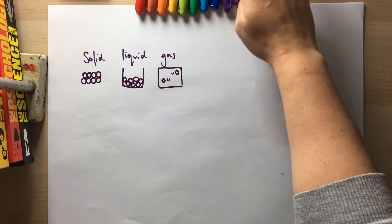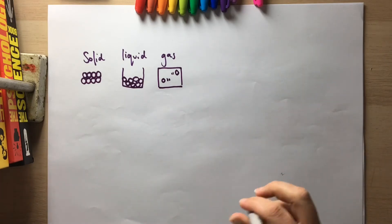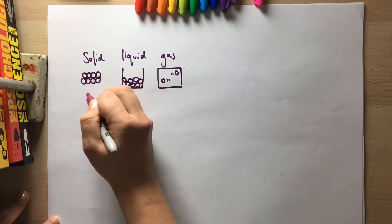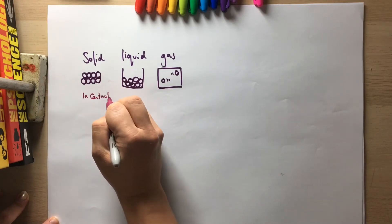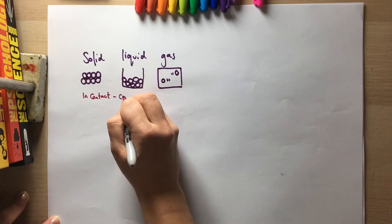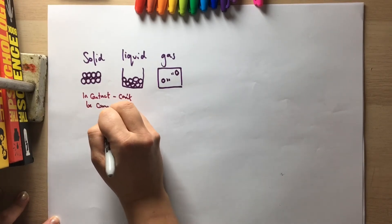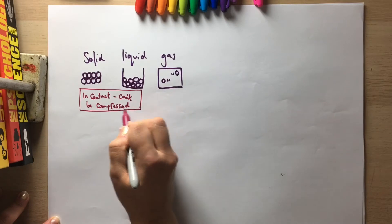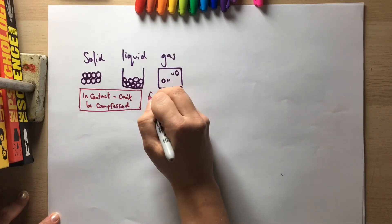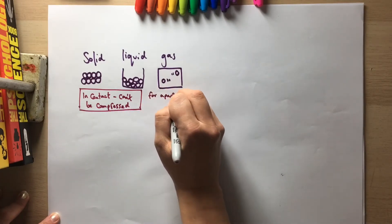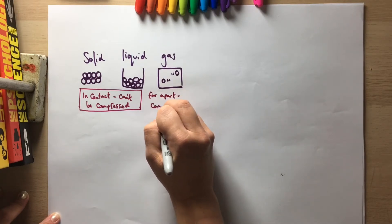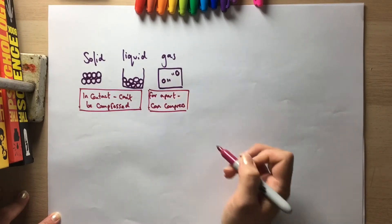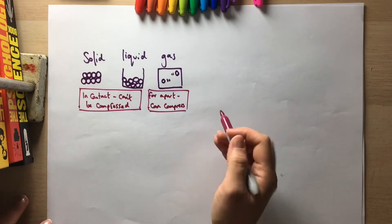The particles in a solid and liquid are in contact, so they can't be compressed. However, in a gas the particles are far apart, so it can be compressed. We can compress a gas, but liquid and solid can't be compressed.